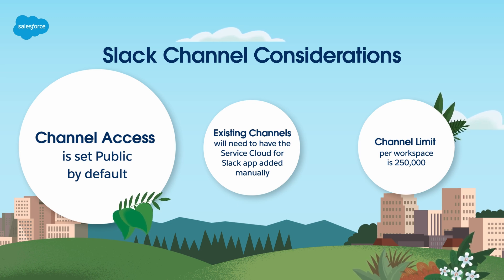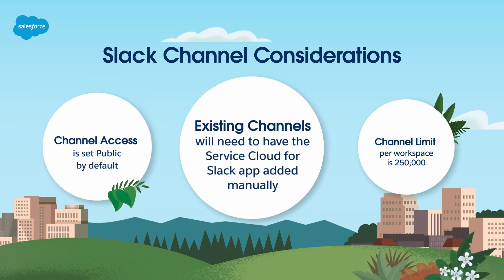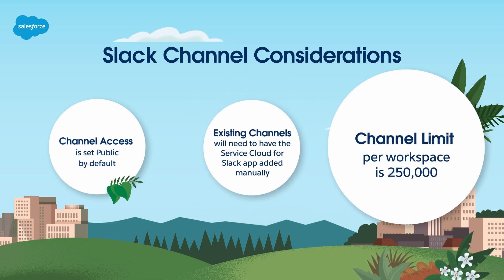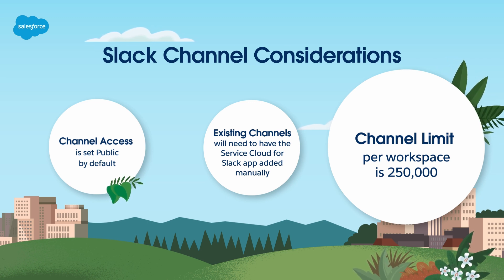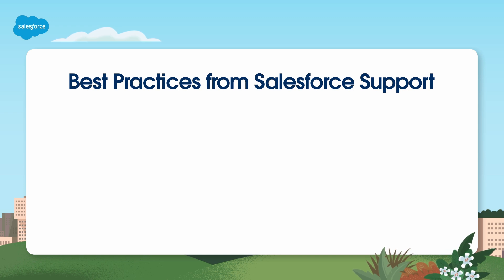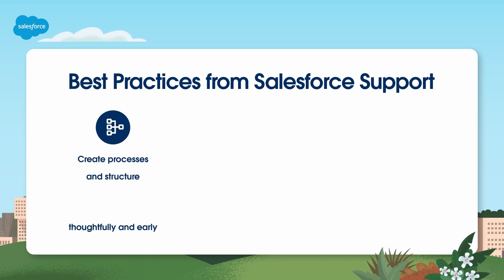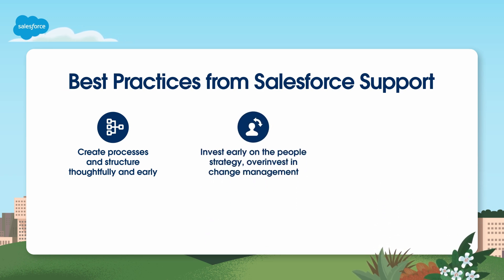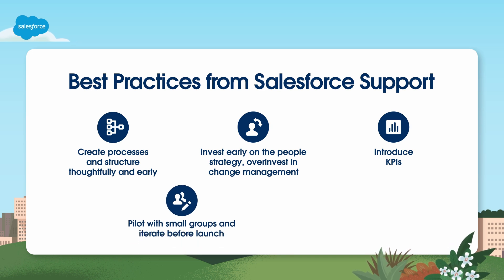Keep in mind that you can't change a private Swarm channel back to public after you've created it. You'll need to add the Service Cloud for Slack app manually for any existing channels you want to use for swarming. For large organizations, note that there is a 250,000 active channel limit per workspace. It's recommended that you create a scheduled archiving workflow to avoid hitting that limit. Best practices from Salesforce support recommend creating processes and structure thoughtfully and early. Invest early on the people strategy and over-invest in change management. Introduce key performance indicators to reinforce collaboration, and pilot with small groups and iterate before fully launching.